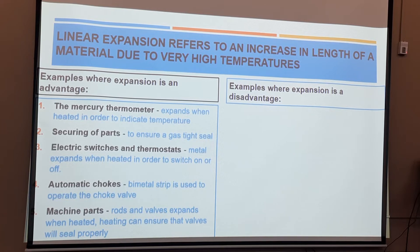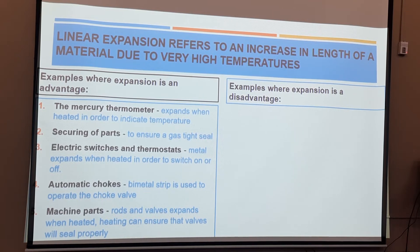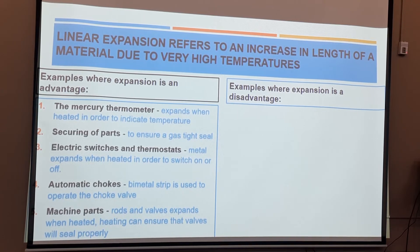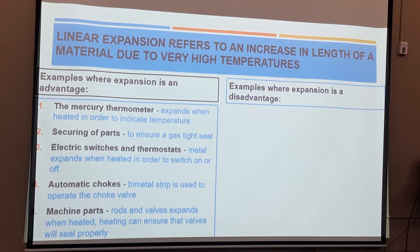This same process applies to the machining of parts. Rods and valves expand when heated, and heating can ensure that valves seal properly. Electric switches and thermostats also use this principle — the metal expands when heated in order to switch on or off. For automatic chokes, a bimetal strip is used to operate the choke valve. A video will be provided showing how a bimetal strip works, as that is one of the experiments we can do to prove expansion.